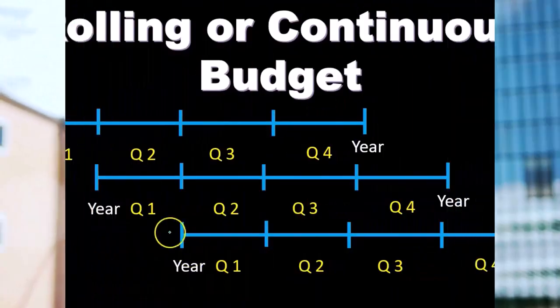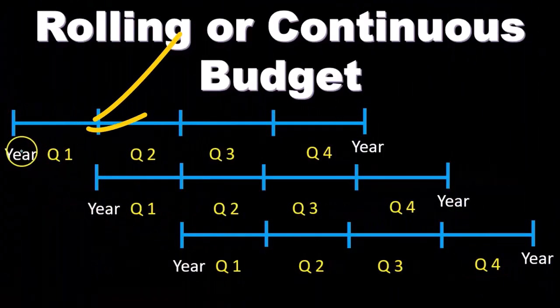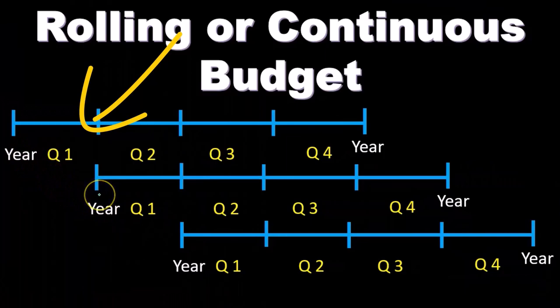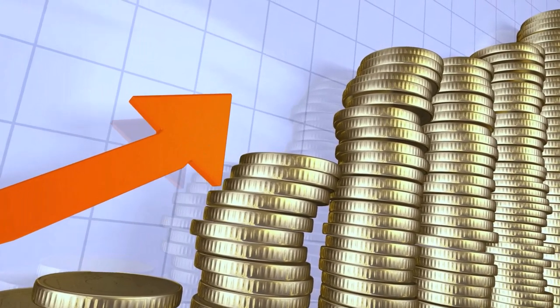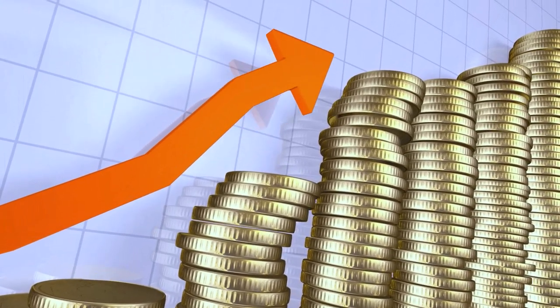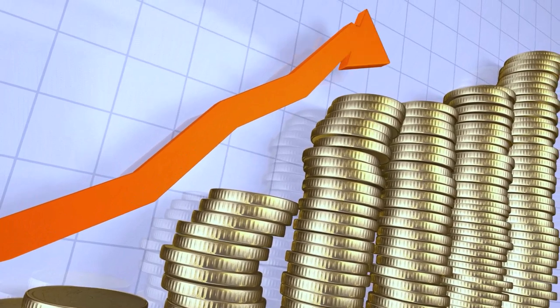It would look something like this. We have the standard yearly budget, and then a quarter goes by — we reset the budget and look out a year based on that new information.